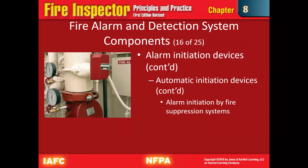Alarm initiation devices are also included on sprinkler risers. You can see a red box at the valve — it detects the flow of water. Many of those systems have a small paddle or fan blade inside that starts turning when it detects water movement, indicating that a sprinkler head has activated and water is flowing somewhere, which triggers an alert.